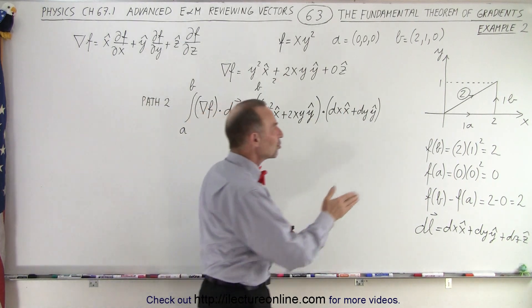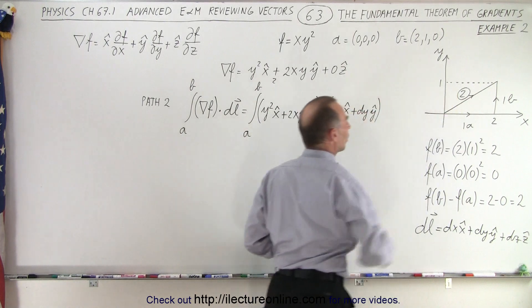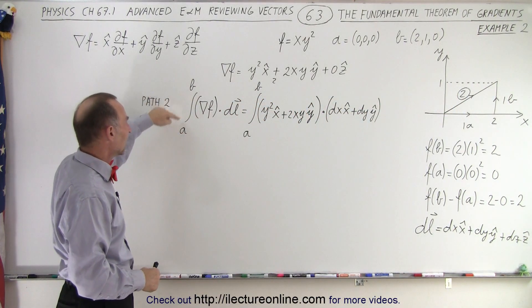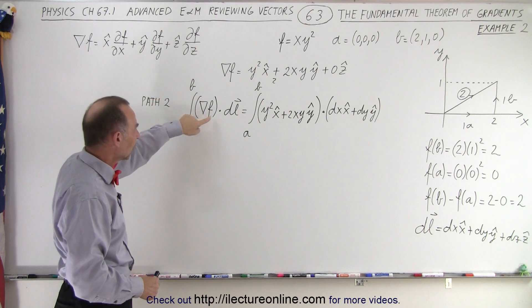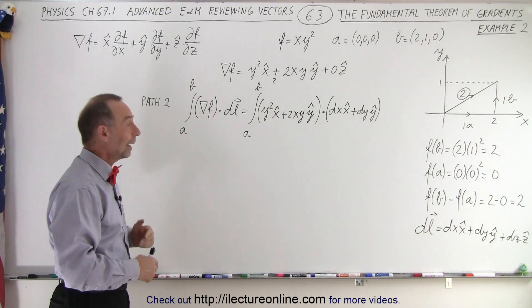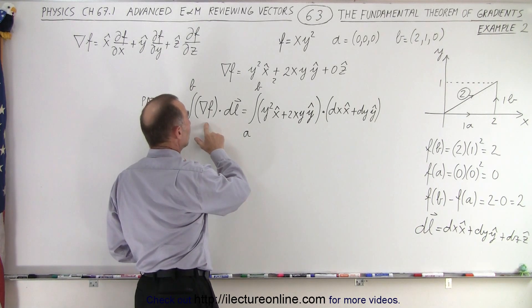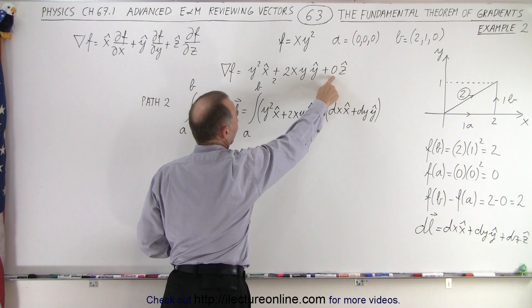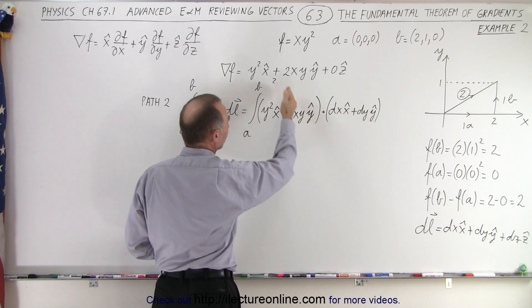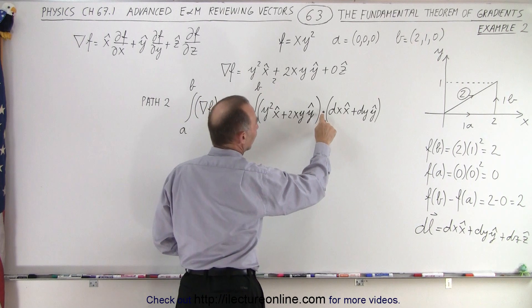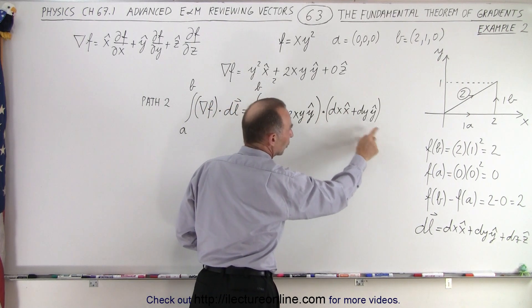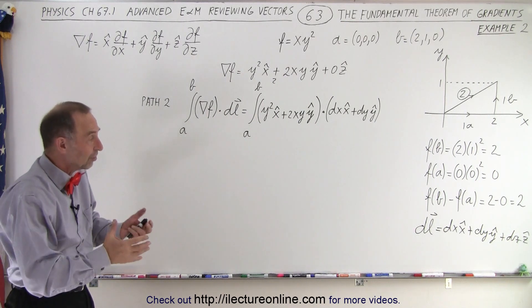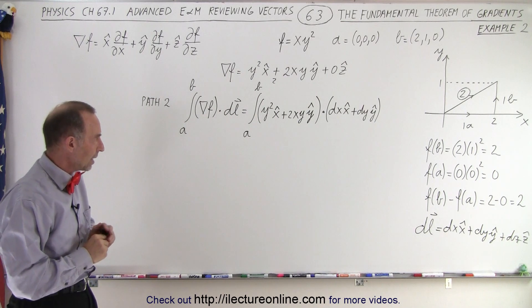But what happens now when we travel along this diagonal line? We call that path two and of course again we're going to take the integral from a to b of the gradient of the function dotted with dl. To get a head start we're just going to take the components that are not zero, so we have the x and y components of the gradient dotted with the x and y components of the line segment dl. z is not changing so dz will be zero.